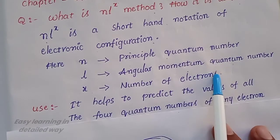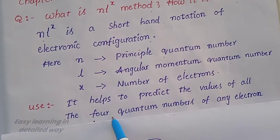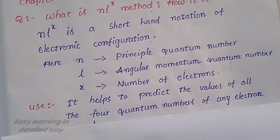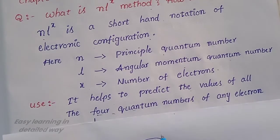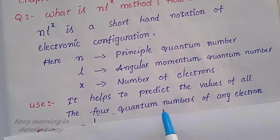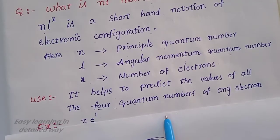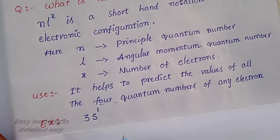See the use of this method. It helps to predict the values of all four quantum numbers of any electron. If you have a particular electron, you can find its principal quantum number, angular momentum quantum number, magnetic quantum number, and spin quantum number.